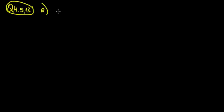Let's go through question 4.5.13. Part A: we have e to the power of 2x plus 3, divided by e to the power of 5x minus 3.